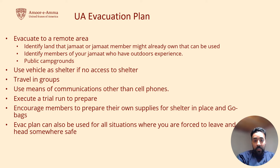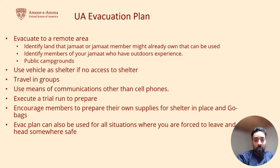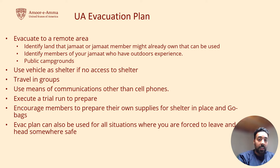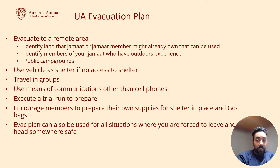Once you've identified the land and team, execute a dry run — evacuate to the land, see what works, what didn't work, and make changes as needed. Get out of the habit of communicating on cell phones; use CB radios, ham radios, or two-way radios. Use your car as a shelter and keep it fueled up. Encourage members to build their own survival kits. The Murayama evacuation plan should be one layer of the disaster preparedness plans you already have — you'd use a different plan depending on the emergency. This plan works not only for nuclear evacuation but for any evacuation: civil war, civil unrest, or any unsafe condition.